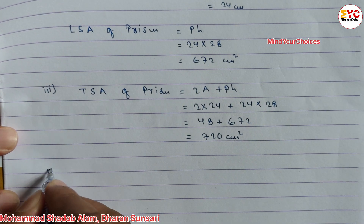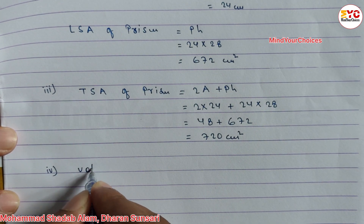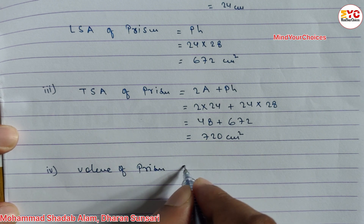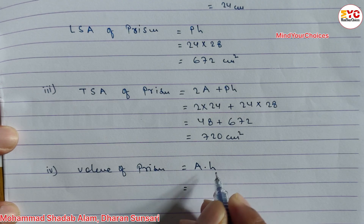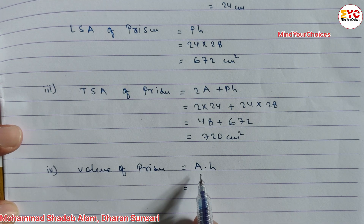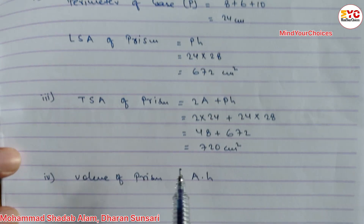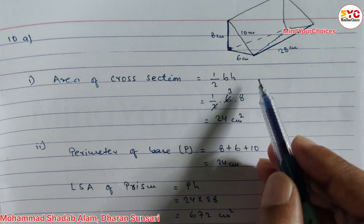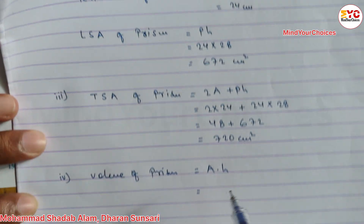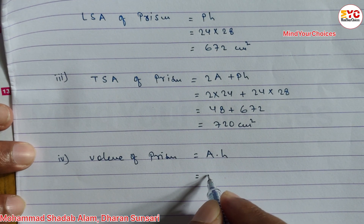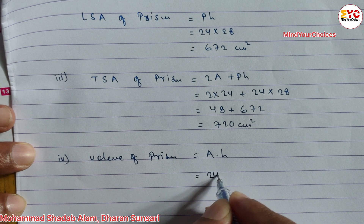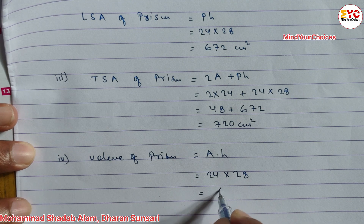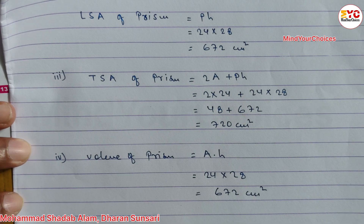In number 4, we have to find out the volume of the prism. The formula for volume of prism is A into H — area of base into height. Area of base means area of cross-section, which is 24. And height means 28. So 24 into 28, and we get 672 cm cube.